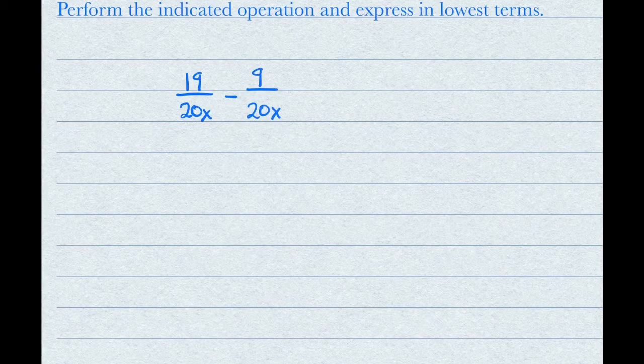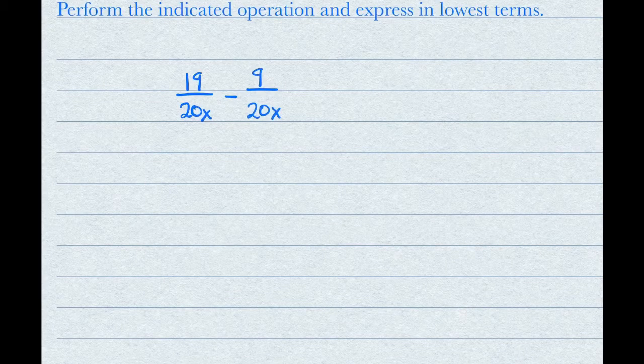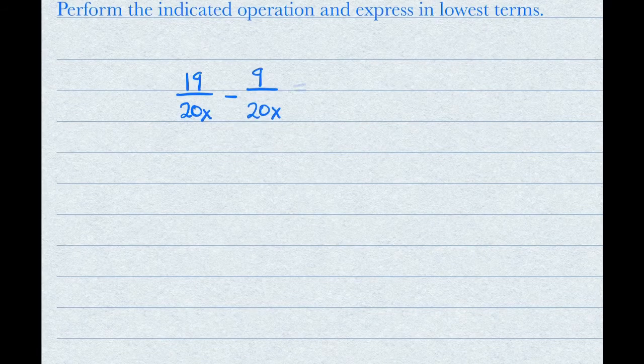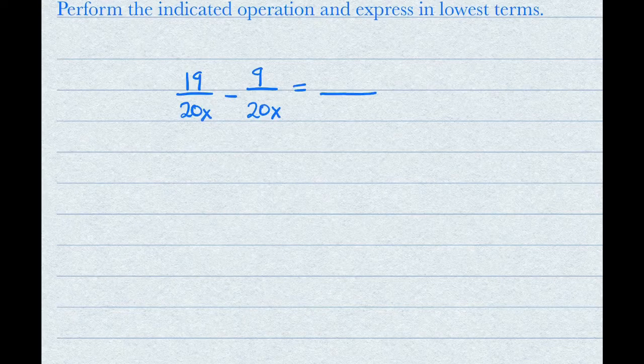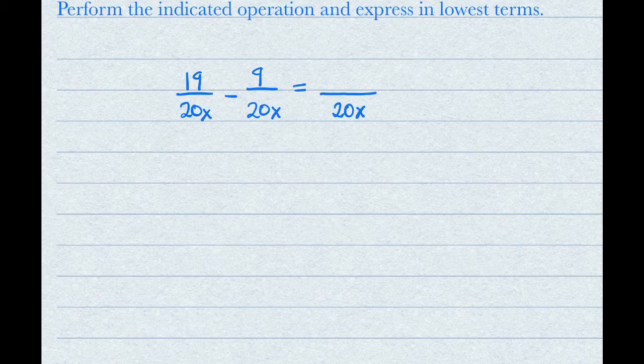Which means that you can go ahead and do the subtraction. If you didn't have common denominators, you'd have to find them first before you could do the subtraction. Since you have a common denominator now, you can write the two fractions as one fraction. The common denominator, 20x, will be the denominator here for the new term.